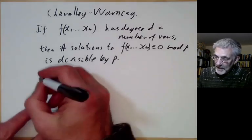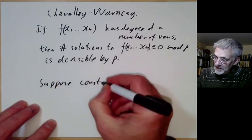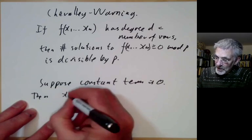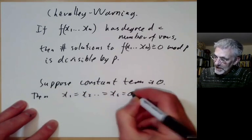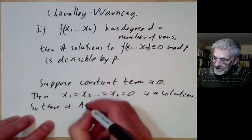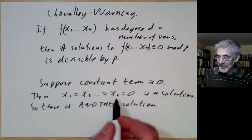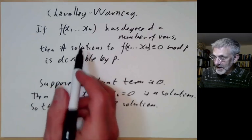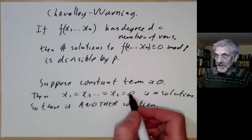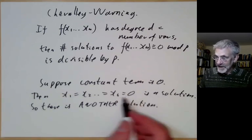In particular, suppose the constant term of f is 0. Then it has an obvious solution where we can just take x1 = x2 = ... = xn = 0 is a solution. So there is another solution. There must in this case be a solution which isn't identically 0. That follows immediately from this part here because the number of solutions is divisible by p and there's at least one solution, which is the 0 solution. So there must be at least p-1 other solutions.